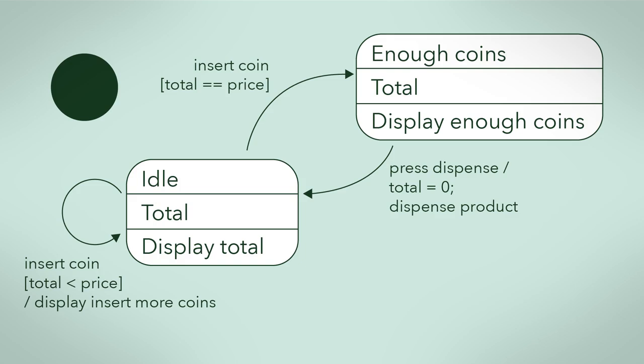In either state, if someone presses the cancel button, the vending machine should return all the coins inserted. So we'll express this with two transitions from the two states, both back to the idle state, and label both transitions with an event press cancel and action total equals zero, eject coins. Here is the resulting state diagram.